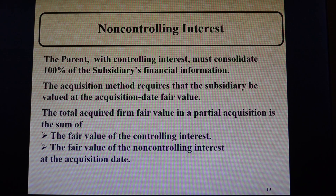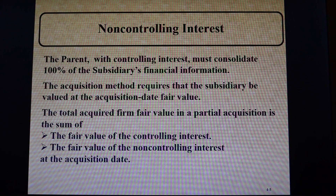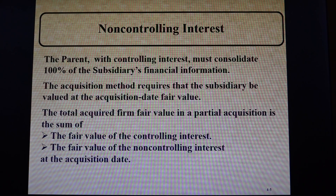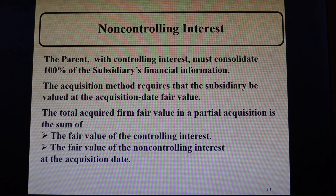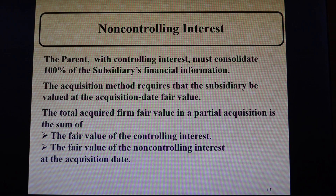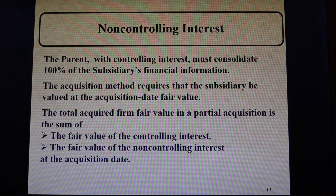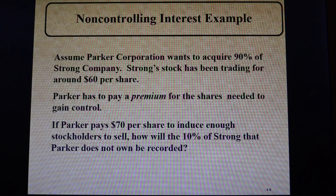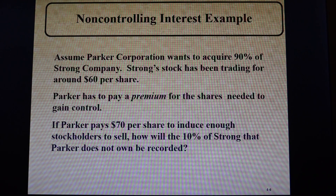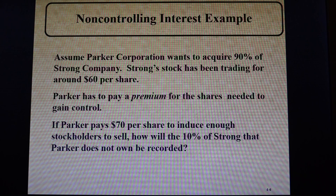Just as we saw before, if the fair values of both the controlling interest and non-controlling interest exceed the fair values of the net identifiable assets and liabilities acquired, they're going to recognize goodwill.